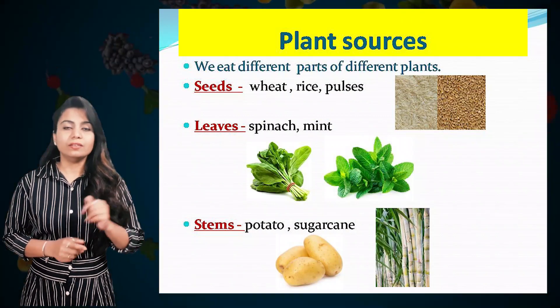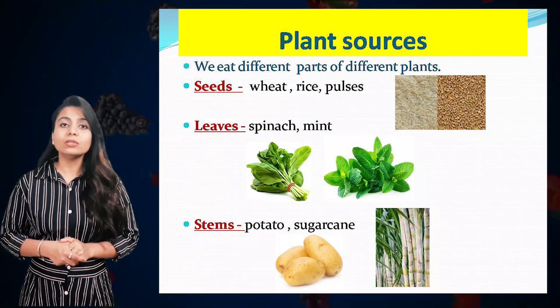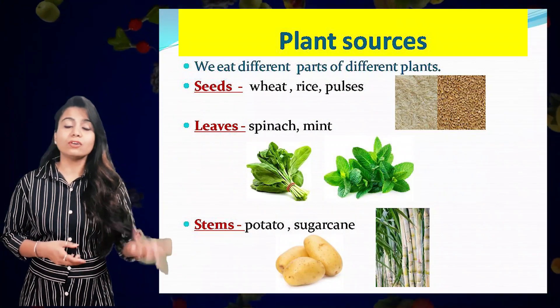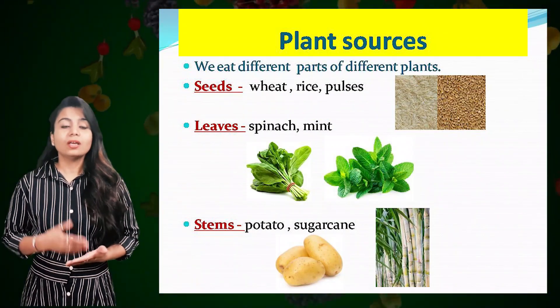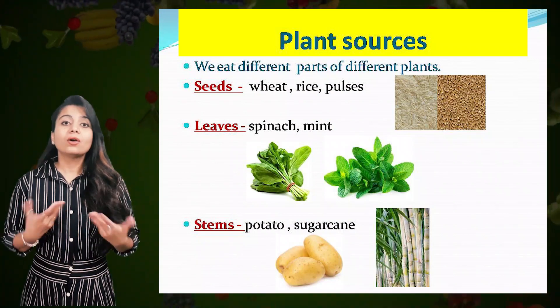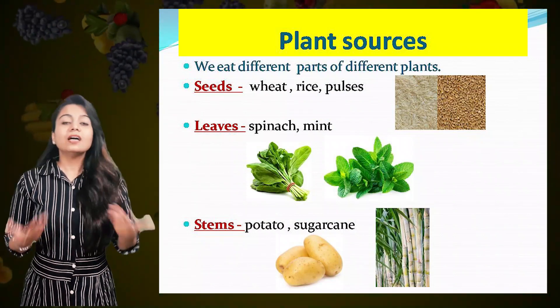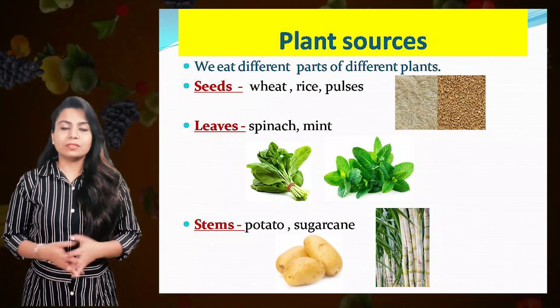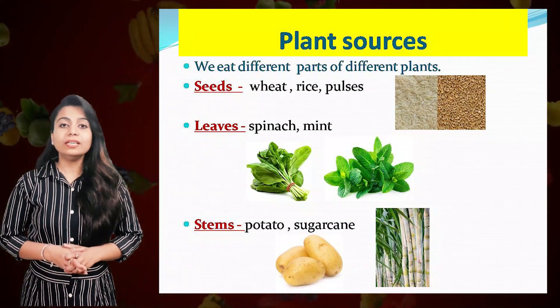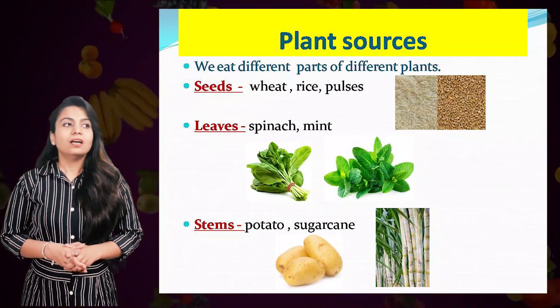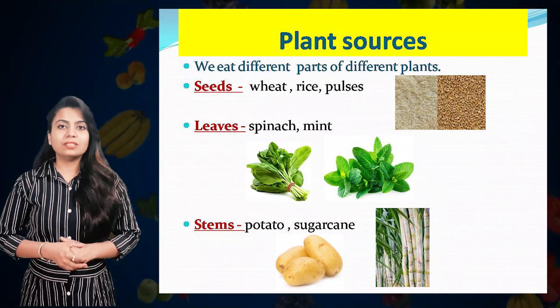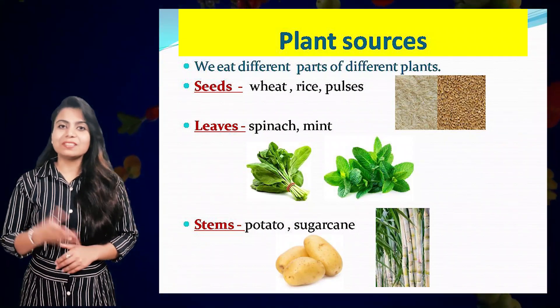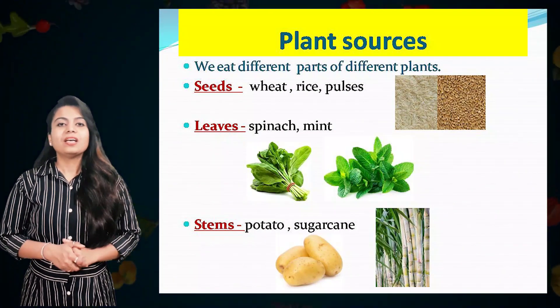Second is leaves. We also eat leaves of plants like spinach, mint, and coriander. Third one is stems. We also eat stems like sugarcane and potato. These are the stems that we eat.